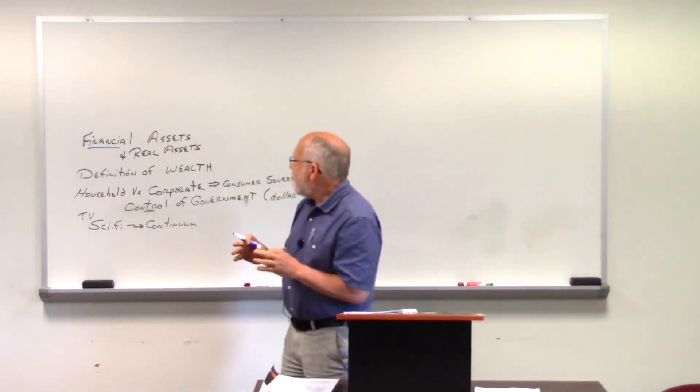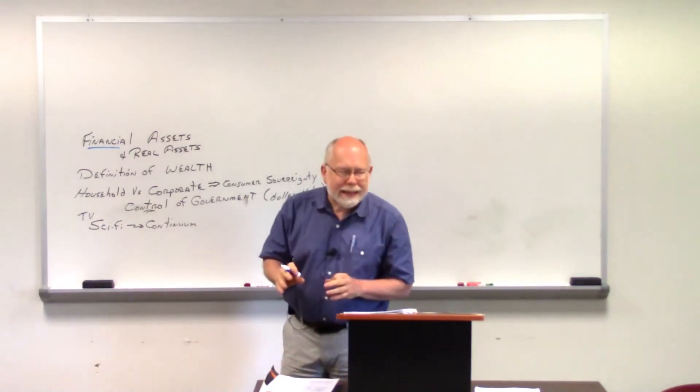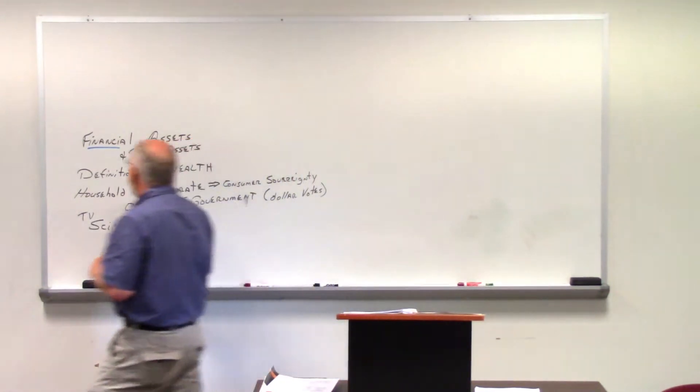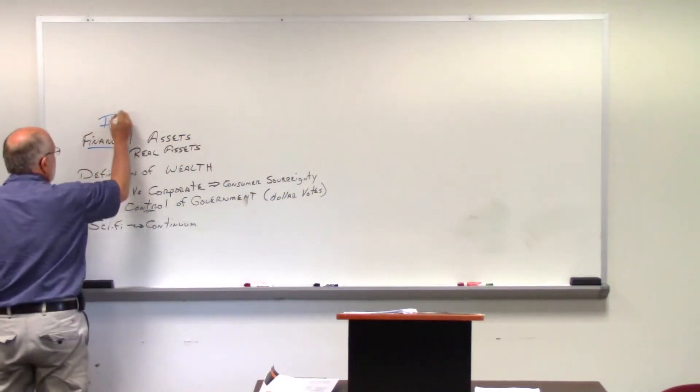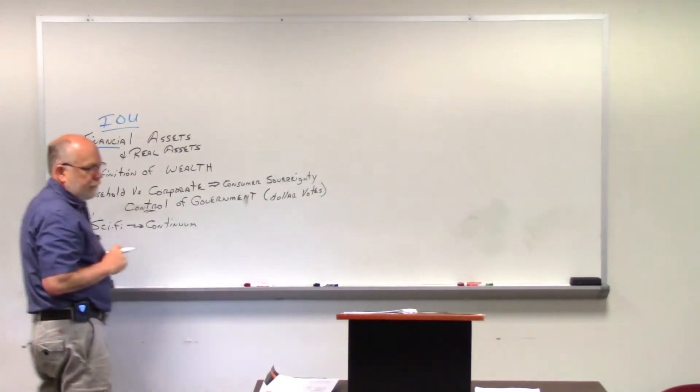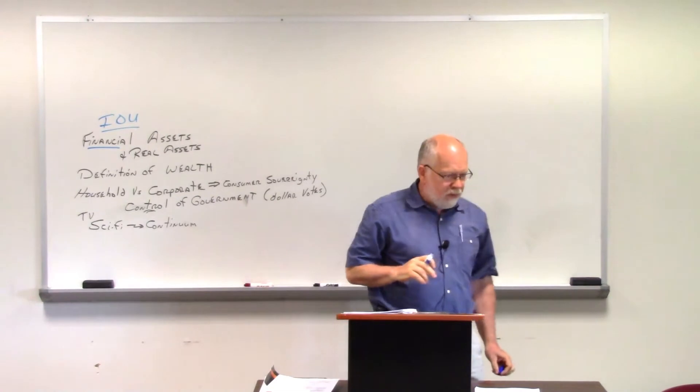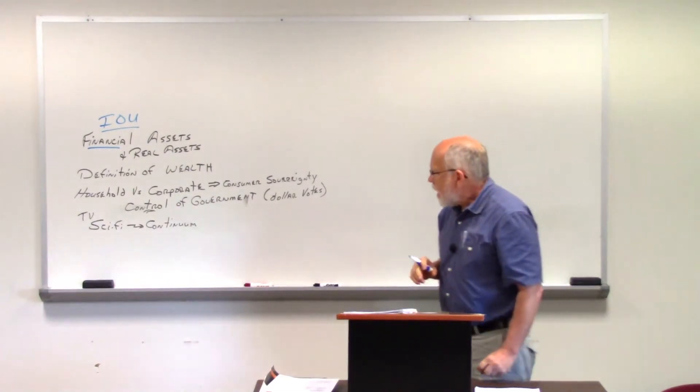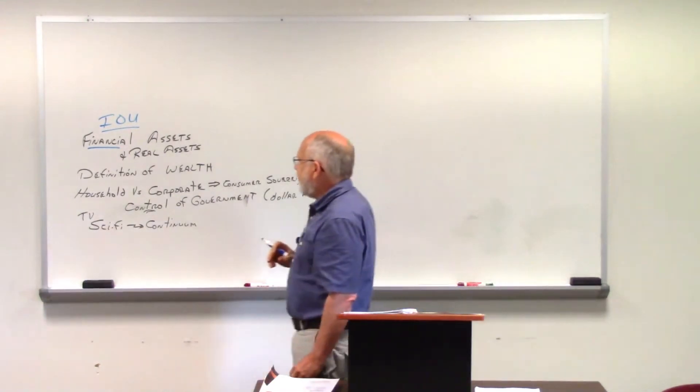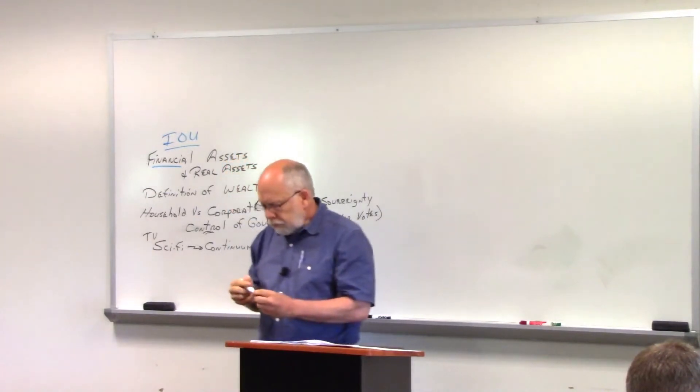The way we can tell a financial asset when we see it, they're all some form of debt. They're all some form of an IOU, some form of a debt. And that's what we call a financial asset.